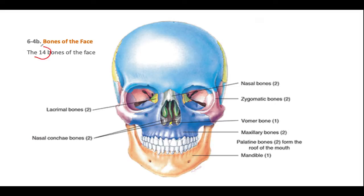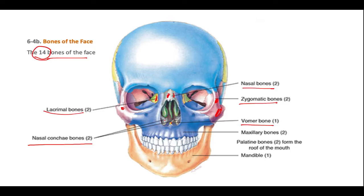So again, we take a look at the 14 bones of the face. We have the nasal conchae bones, the lacrimal bones inside, and the nasal bones — two of those. Zygomatic bones — one here and one here — these are the cheek bones. The vomer bone is inside the nose, a thin plate. The maxillary bone is the top part of the jaw, and the mandible is the lower part. The palatine bones form the roof of the mouth on the inside.